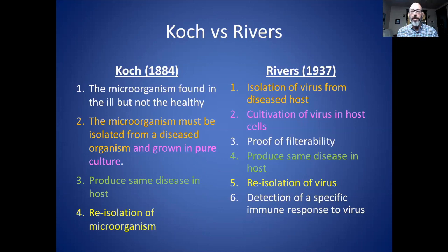The fifth criterion is re-isolation of the virus from the person in whom you produced the disease. And finally, the sixth is detection of a specific immune response to the virus. This sixth criterion is much more difficult to prove because of the specificity issue, but in my opinion it is the least important of the criteria.